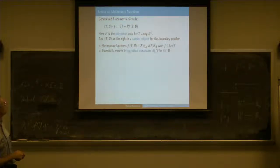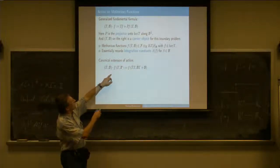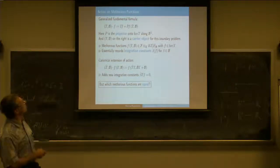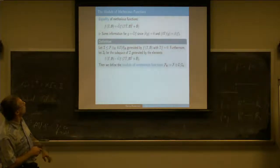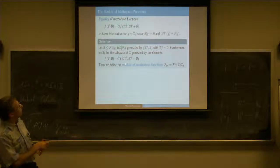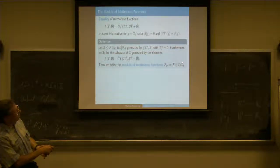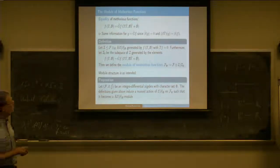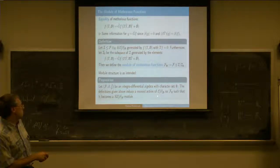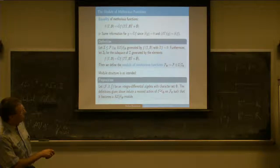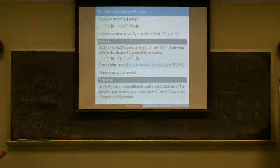The formal definition is a kind of tensor product. The role of this factor is recording the integration constants. Then it's easy to extend the action with such a carrier object; I factor out some of them because some things will be equal. The module of Methorius functions is the original functions together with this quotient of the tensor module. It turns out you do get the module action of the original ring of boundary problems—so these are not yet Methorius operators, just boundary problems acting on this module.